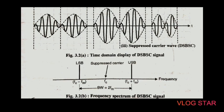Let us see the diagram of double sideband suppressed carrier. From the AM wave, that is DSB-FC, if only the carrier component is suppressed, then the remaining signal is called double sideband suppressed carrier signal. The time domain display of the DSB-SC signal is shown in this figure — this is the waveform of the double sideband suppressed carrier signal.